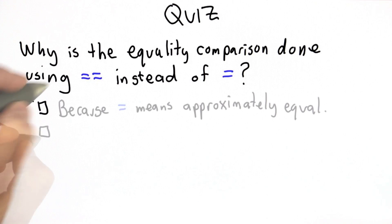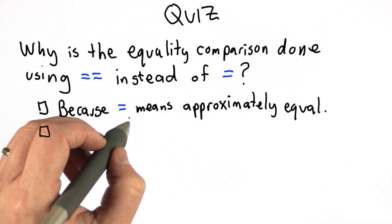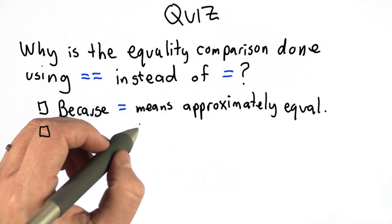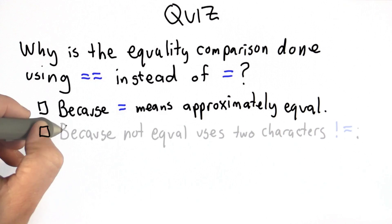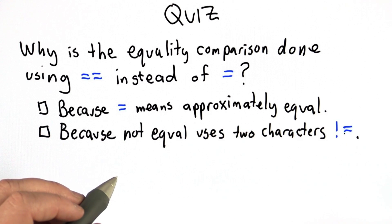So the possible answers: because the single equal sign means approximately equal, and we want to do exact equality comparisons. Because we needed to use two characters for the not equal comparison, and we wanted the equal to be the same length.